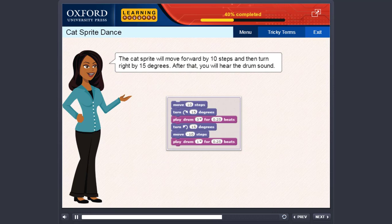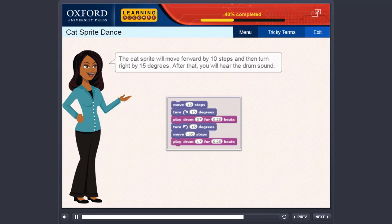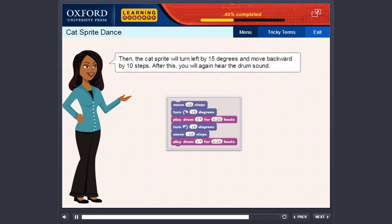Click the blocks to run the programming code. The cat sprite will move forward by 10 steps and then turn right by 15 degrees. After that, you will hear the drum sound. Then the cat sprite will turn left by 15 degrees and move backward by 10 steps. After this, you will again hear the drum sound.